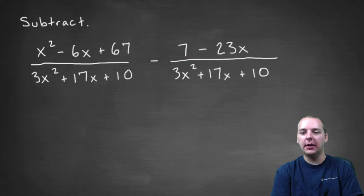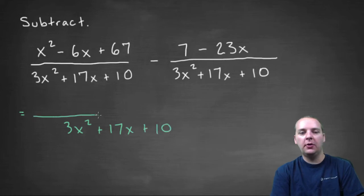Alright, so let's do that then. So we'll have just a common denominator of 3x squared, plus 17x, plus 10. Then we'll have a long fraction bar, and we'll have a whole lot of terms in the numerator. We'll have x squared, minus 6x, plus 67.